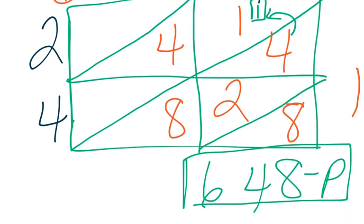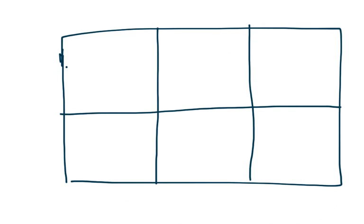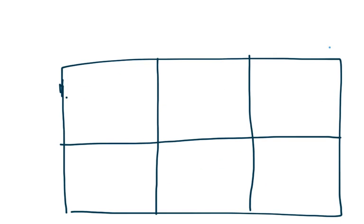Alright, so now let's continue. Let's look at one more. So now we have 362 times 81. Wow, this is going to be a big one. So as you can see, I have a 3-digit number, 2-digit number. 1, 2, 3, 4, 5, 6 boxes. So let me build this up.